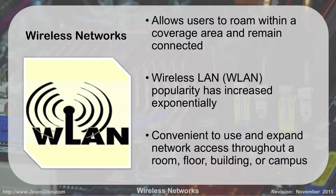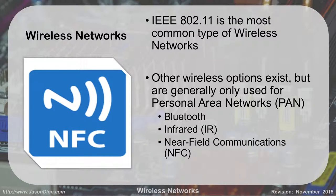At AACC, our main campus, no matter where you are on campus, you can pick up Wi-Fi — same thing with this building here at the Cyber Center. There are lots of different wireless networks out there. By far the most common is 802.11, which is the wireless networking you think of when you talk about Wi-Fi. There are other options for personal area networks, like Bluetooth, infrared, and near-field communications, but most people are thinking Wi-Fi and 802.11.